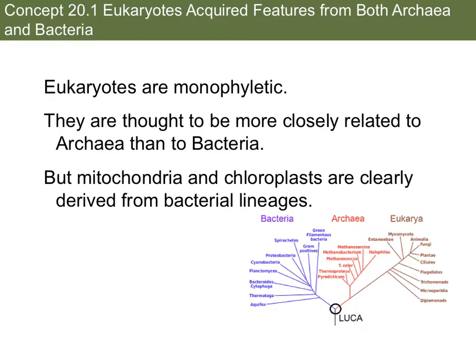Eukaryotes are thought to be more closely related to archaea than bacteria. You can see here that this node right here leads up to archaea. However, eukaryotes are over in this direction, as opposed to bacteria, which are over in this area right here. However, we're going to talk about how the mitochondria and chloroplasts, which are components of the eukaryotic cells, are clearly derived from this branch instead.